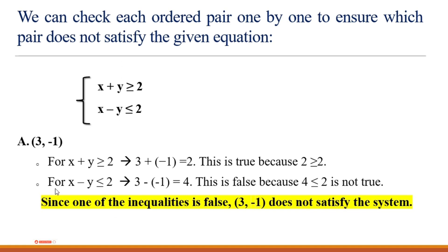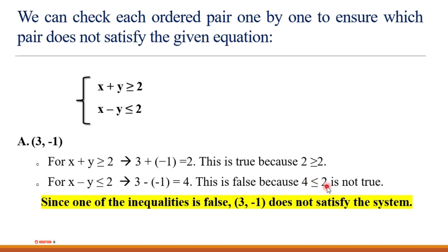Now checking the second inequality for option A: x minus y, which must be less than or equal to 2. With x equals 3 and y equals -1, we get 3 minus (-1) which equals 4. Since 4 is not less than or equal to 2, this is false. Since one of the inequalities is false, this pair does not satisfy the system.